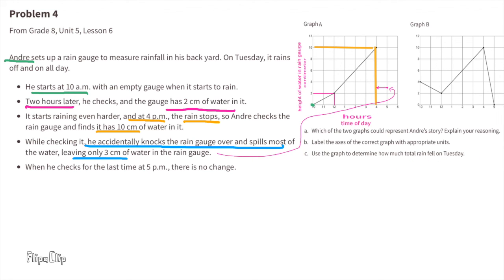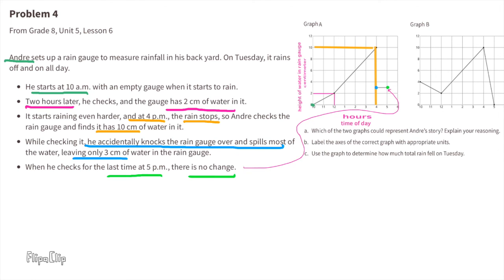It also mentions that Andre was checking it and he accidentally knocked the rain gauge over, spilling most of the water and leaving only three centimeters of water in the gauge. This is represented in the graph — I've drawn an arrow to the graph that marks this event. It also mentions that he checks for the last time at 5 p.m. and there is no change, meaning it hasn't rained since the last time he checked.